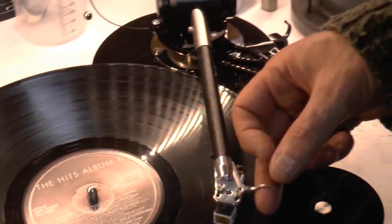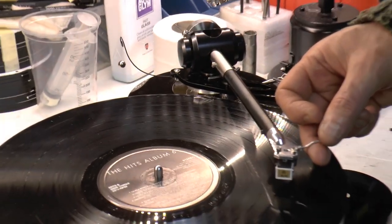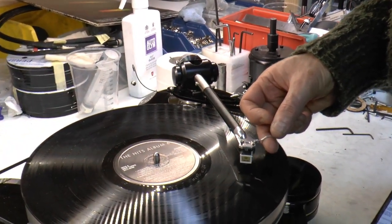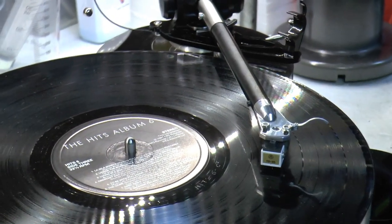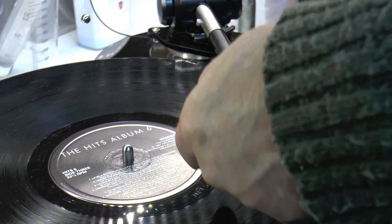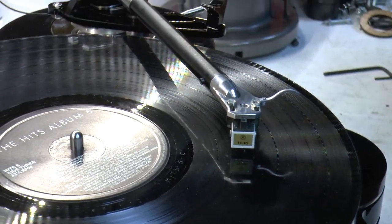I personally like to set up side bias by listening rather than using test records. I normally listen to a track about a third of the way out from the inner grooves. The reason is because the modulation in the inner grooves is much more severe for alignment.